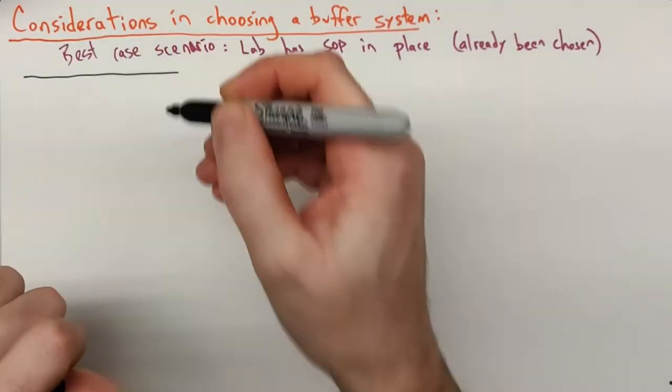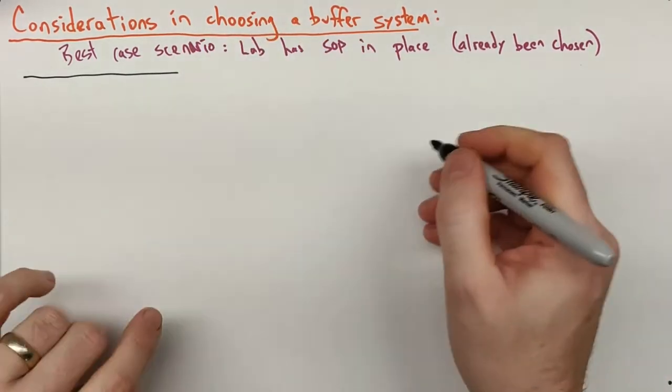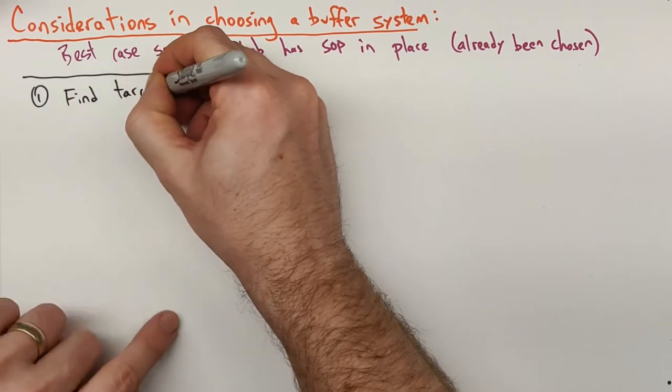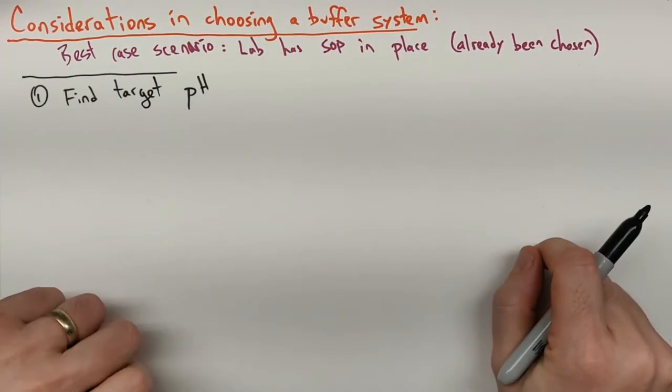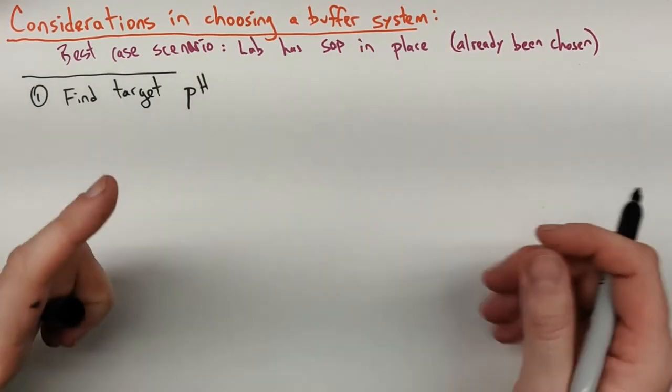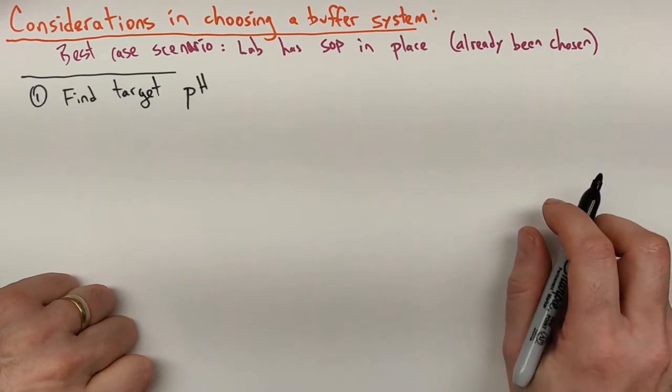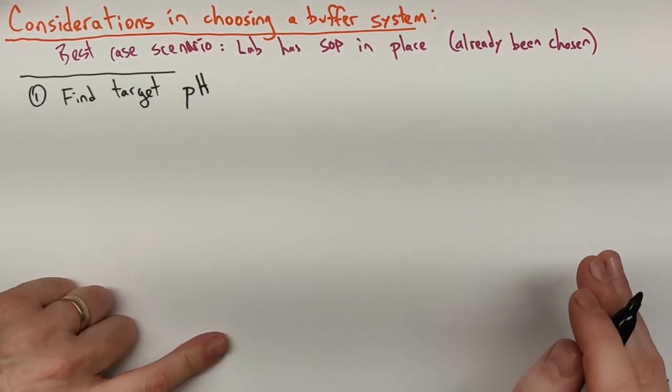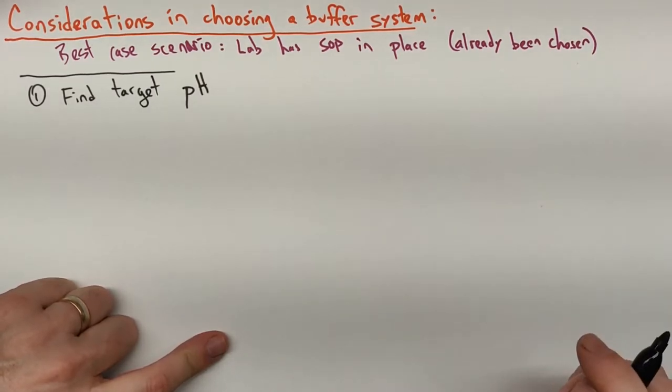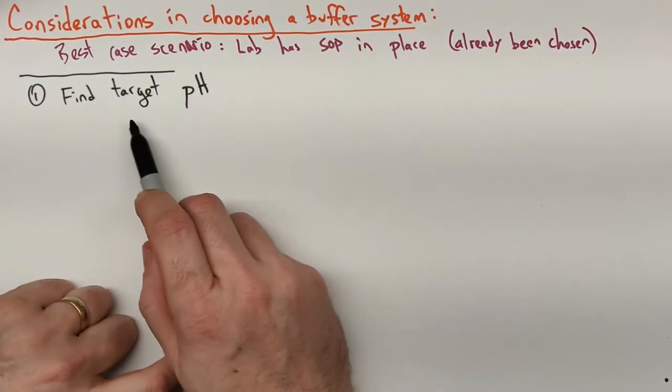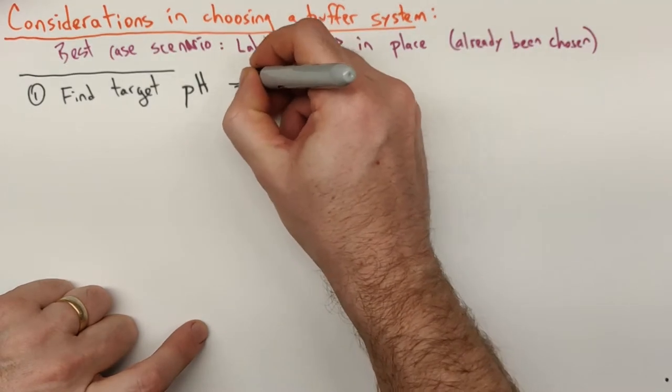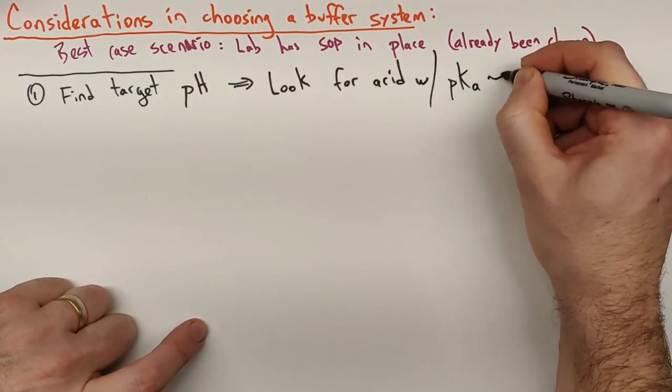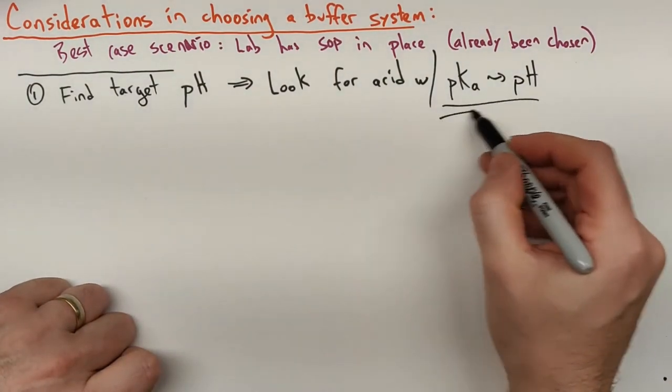I don't want it to feel too overwhelming. It's not as bad as it seems. So the first and primary consideration in choosing a buffer system is your target pH. Once you know your target pH, you're going to look for some acid with a pKa that's as close to that pH as possible. This is a key step.